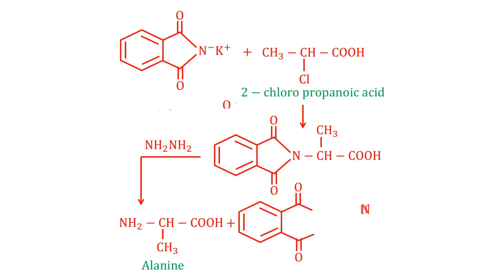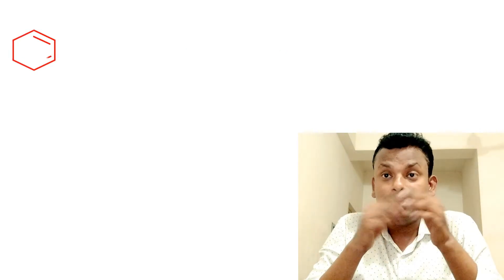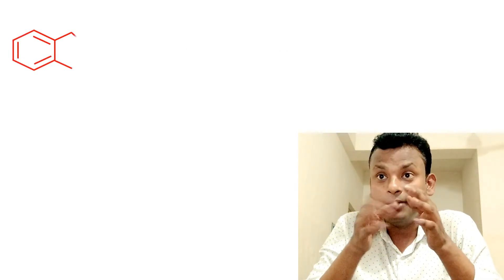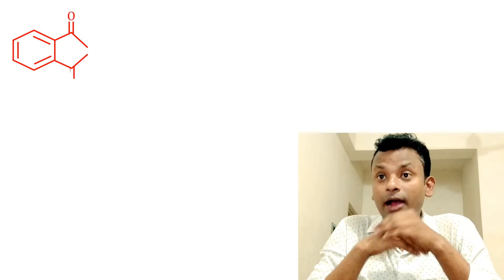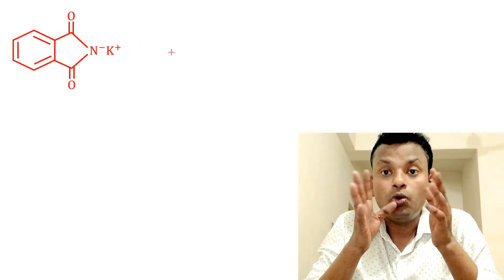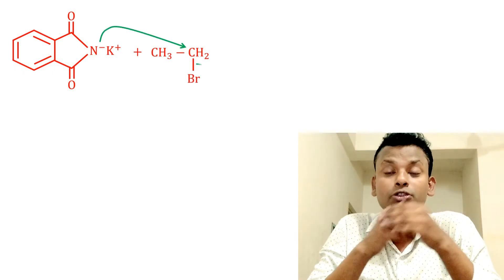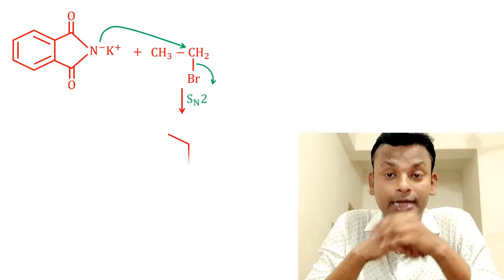Another example: ethyl bromide reacts with the phthalimide anion to give an N-alkyl phthalimide product, and hydrolysis gives the one-degree amine, that is ethylamine, and also forms the dicarboxylate ion.